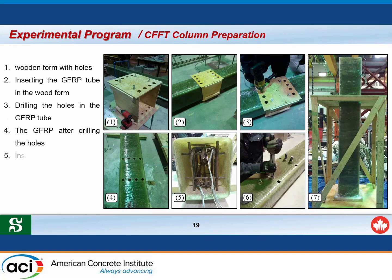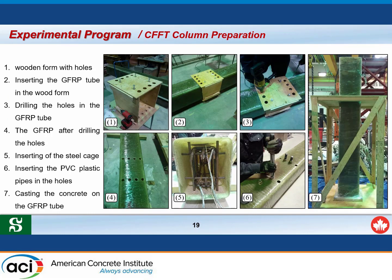Preparation of the CFFT column began by fabricating a wooden form, inserting the FRP tube, and making holes in the top and bottom surfaces at the same alignment. Steel cages were then inserted inside the CFFT column, followed by the insertion of rods and PVC pipes. The column was then placed in a vertical position ready for casting. An animation illustrates these steps.